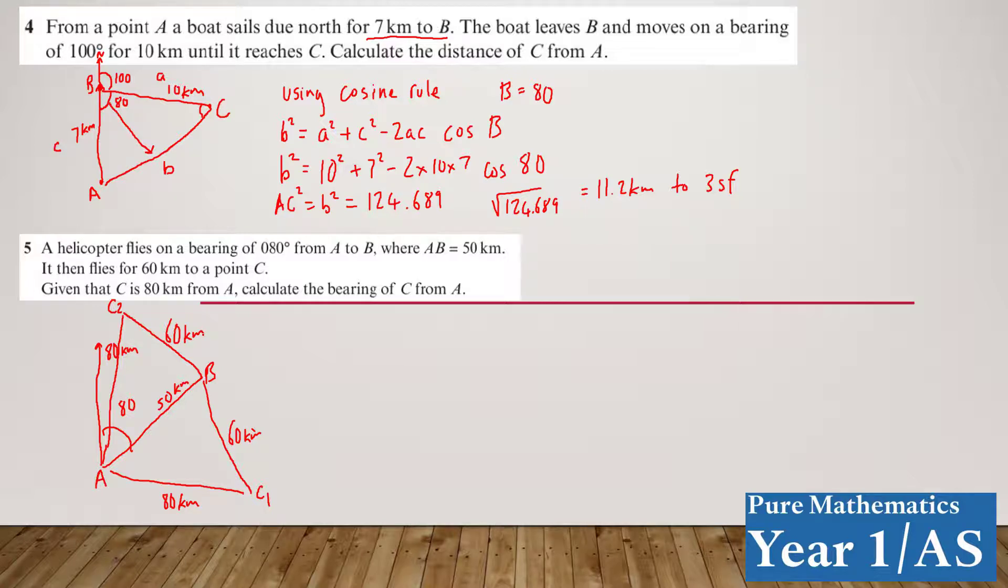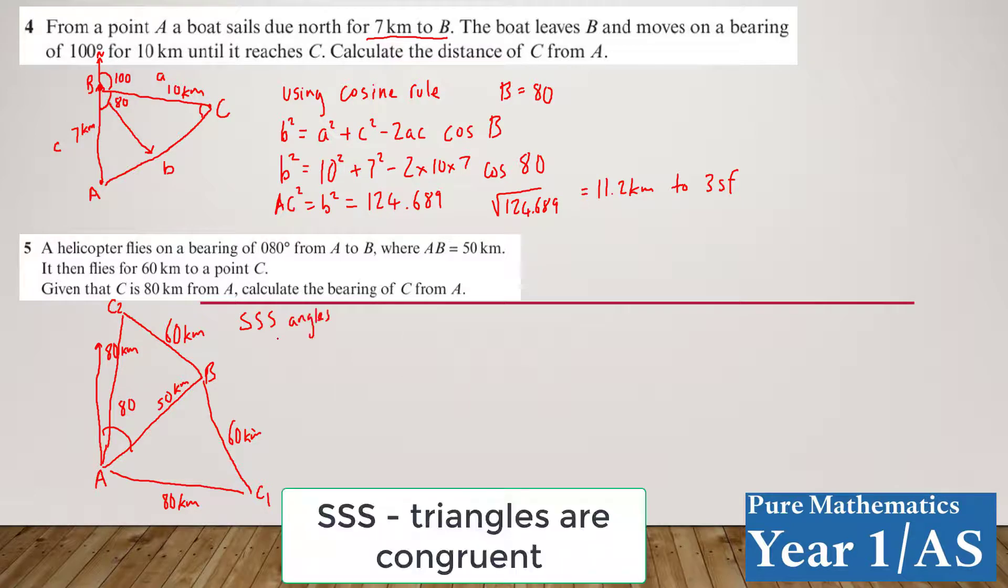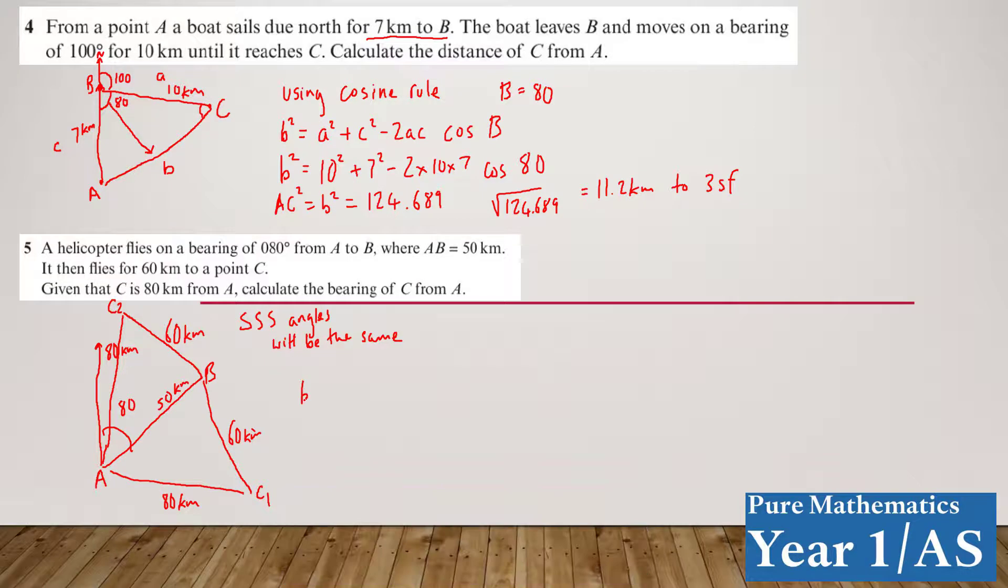But the angle should be the same for both lengths, for both sections of C, because if you have a triangle that is side, side, side, and you have all three sides, the angles will be the same. So, if you just start with what we had before, you want to calculate the bearing of C from A. I'm going to start with this one here. You're going to work out this bearing here.